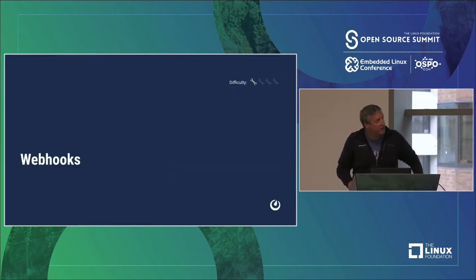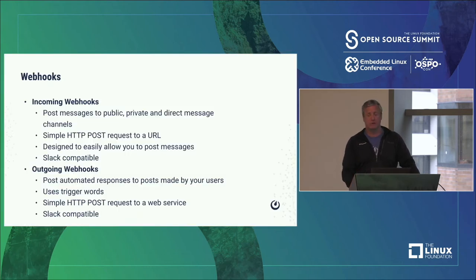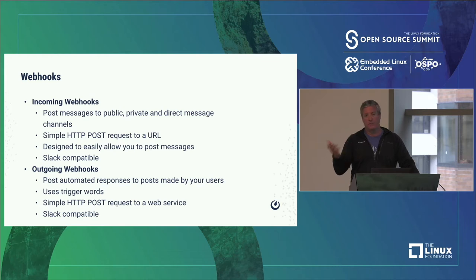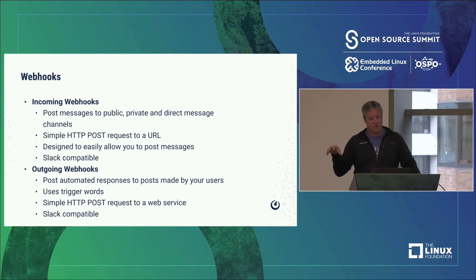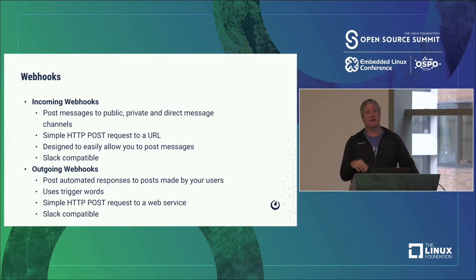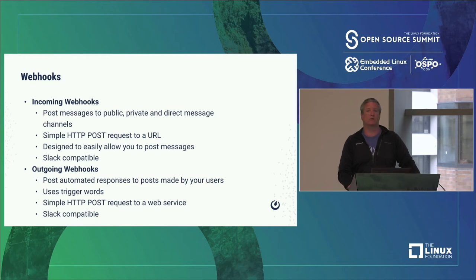We start with webhooks — difficulty is about one out of four. We support two different types: incoming webhooks and outgoing webhooks. With incoming webhooks, you can post a message to a channel via URL — it's a simple HTTP POST request. It's designed to be very easy to get data into the channel. The really cool thing is they're Slack compatible, so if you have a Slack webhook that works, more than likely it'll just work in Mattermost. Outgoing webhooks are kind of the reverse — we automate a response to a post made by a user using trigger words. Once again, Slack compatible.